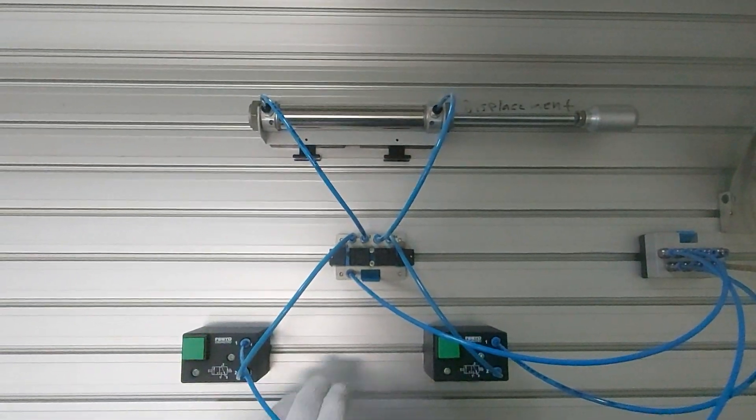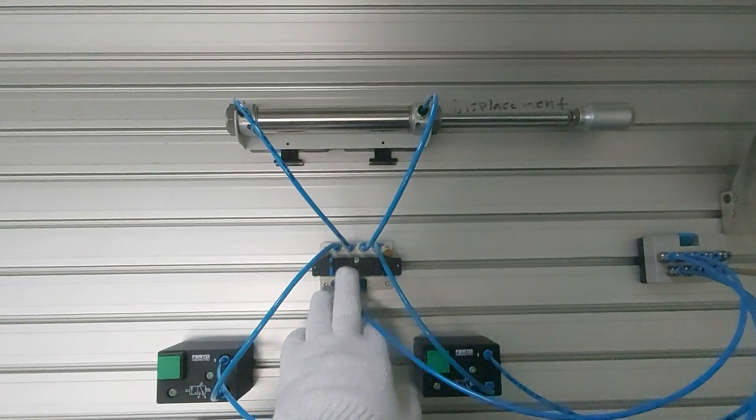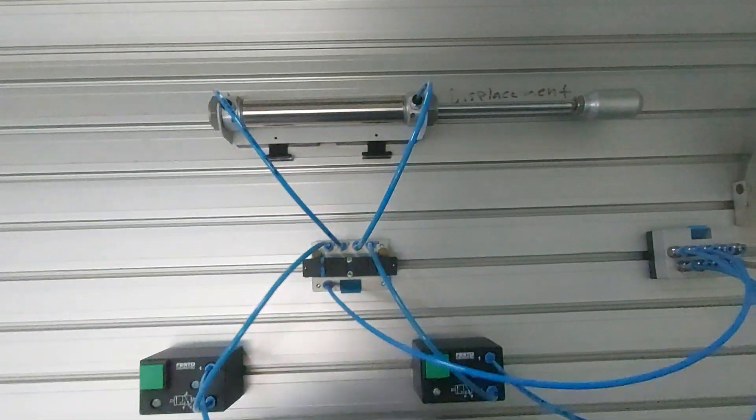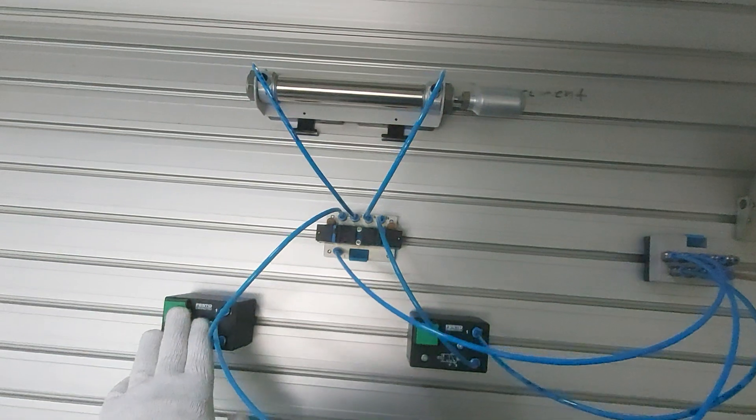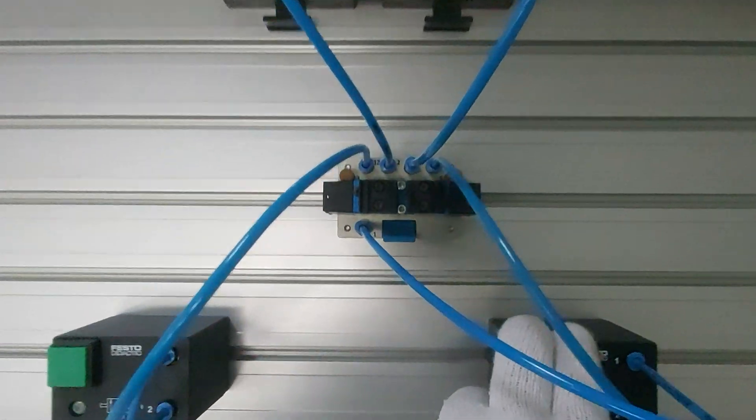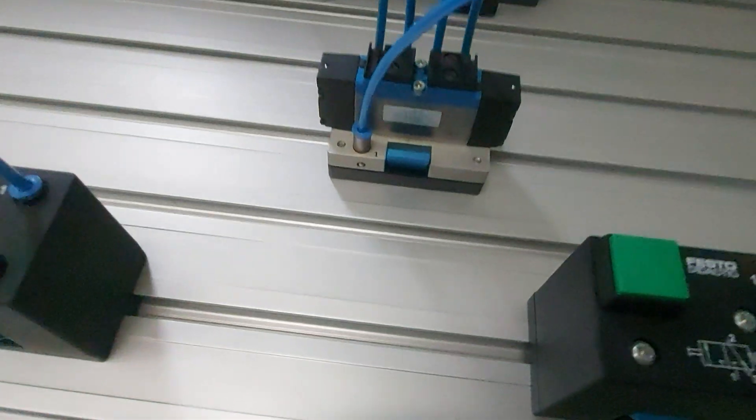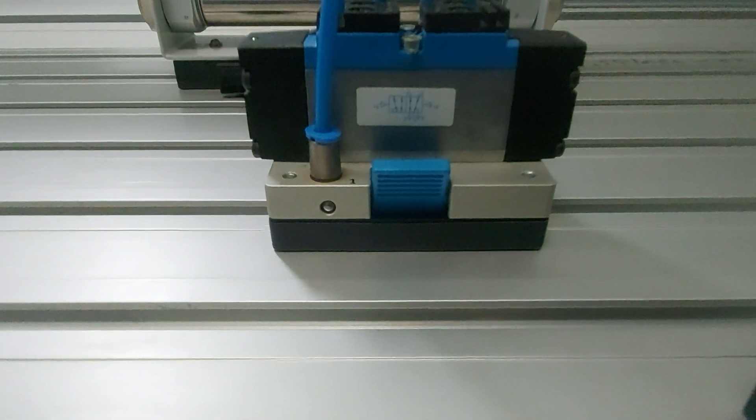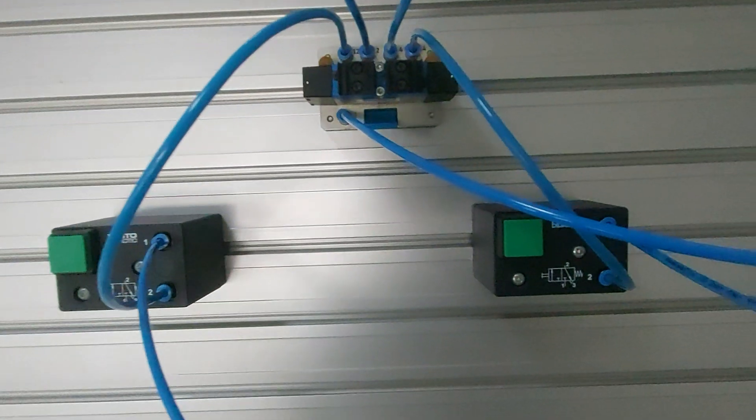So this is the use application of 5x2 double pilot valve and double acting cylinder. The circuit diagram will be there always for each and every valve on the valve body itself.